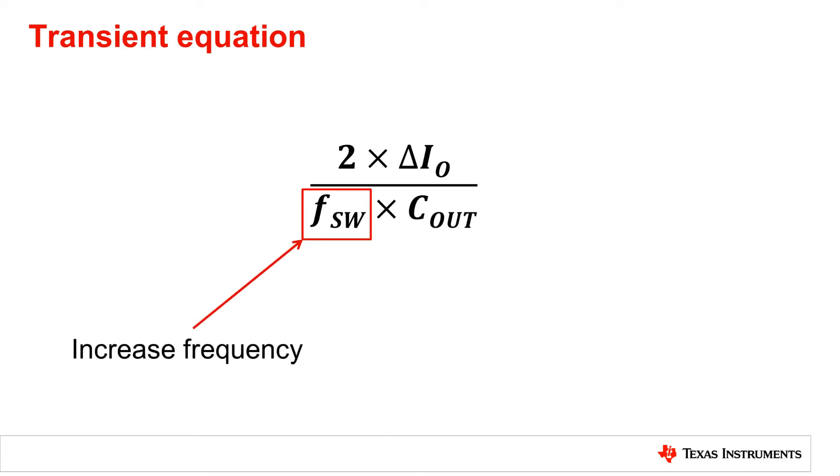One can either increase the switching frequency of the converter or the output capacitance of the converter. Increasing the switching frequency is not always an option as designs often have switching frequency as a parameter that is unable to be changed.